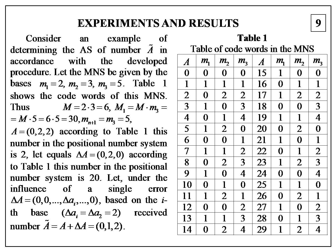The article presents an example. Consider an example of determining the alternative sets of number a in accordance with the developed procedure. Let the modular number system be given by the basis M1 equal to 2, M2 equal to 3, M3 equal to 5. Table 1 shows the code words of this modular number system.